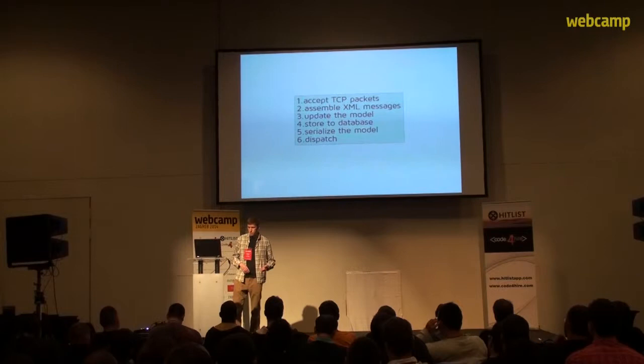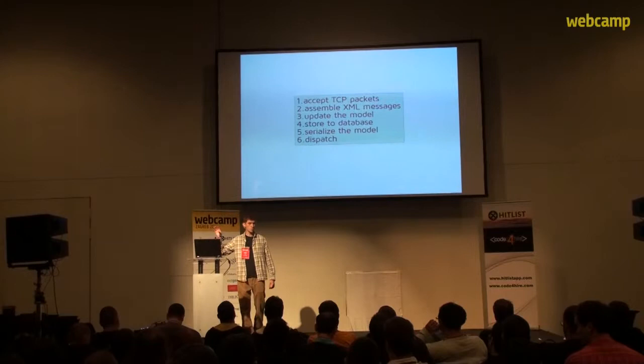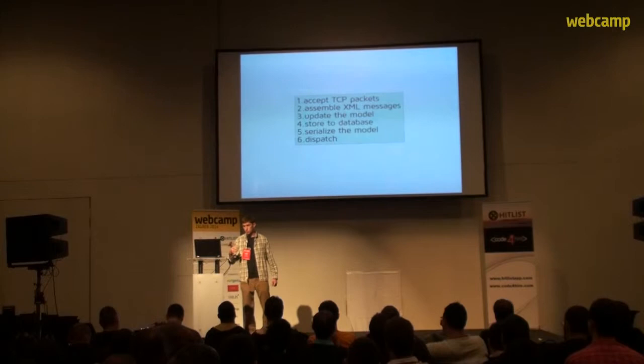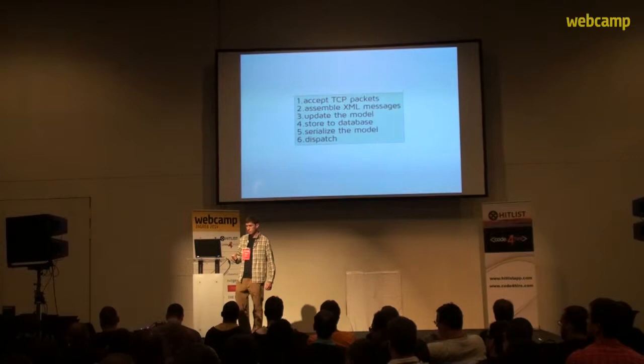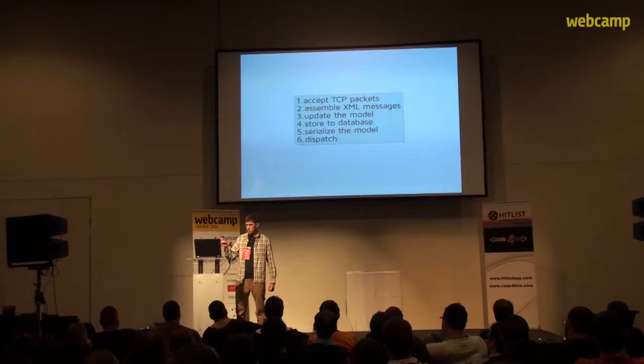The high-level overview of what we have to do: we have a third-party company which is our data source. We establish a TCP connection to their server, and through this connection we continuously receive a stream of XML messages, each describing some changes to multiple matches. We then have to interpret those messages and continuously, incrementally build our own server-side model — our own view of the world — embellished by data from our own database. We apply some of our own business rules, and once we update the model, we usually have to store some entities to the database — most frequently those betting odds. Then we strip some fields we don't need on the client side, encode to JSON, and give it to the HTTP push server.